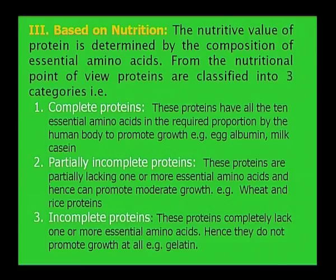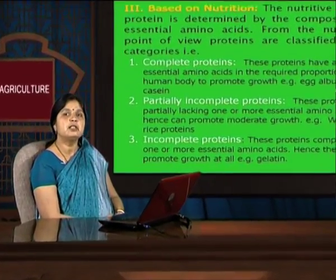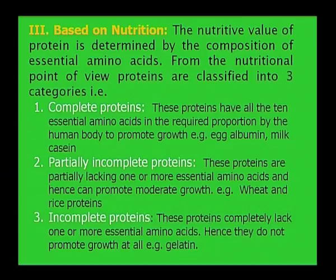Complete proteins have all 10 essential amino acids in the required proportion by the human body to promote growth. Examples of complete proteins are egg albumin and milk casein. Partially incomplete proteins are partially lacking one or more essential amino acids and hence can promote only moderate growth. The example of partially incomplete protein is wheat and rice proteins.